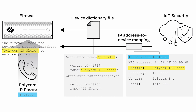Similar to how User ID provides user-based policy and App ID provides app-based policy, Device ID provides policy rules that are based on a device, regardless of changes to its IP address or location. A firewall imports a device dictionary file from IoT security, and the dictionary file populates entries in all the Device ID attributes list for profile, category, vendor, and so on. These attribute entries are then available for use in a policy rule.